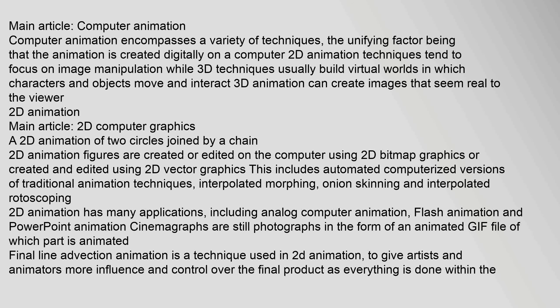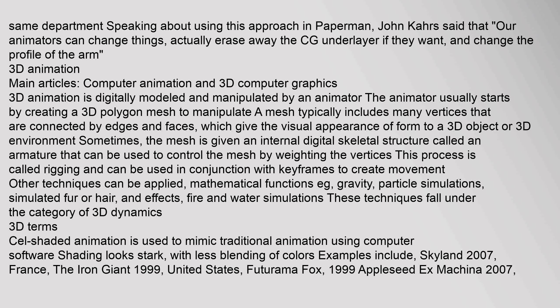2D animation has many applications including analog computer animation, flash animation, and PowerPoint animation. Cinemagraphs are still photographs in the form of an animated GIF file of which part is animated. Final line advection animation is a technique used in 2D animation to give artists and animators more influence and control over the final product, as everything is done within the same department. Speaking about using this approach in Paperman, John Kars said animators can change things, erase away the CG underlayer, and change the profile of the arm.